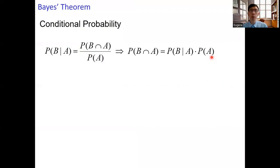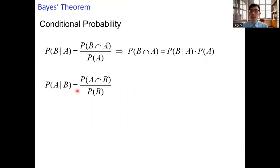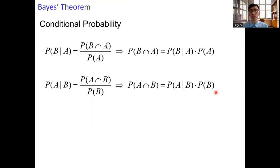If we swap the roles of B and A, we get the probability of A given B equals the probability of the intersection of A and B over the probability of B. Solving for the probability of the intersection of A and B, we get the probability of A given B times the probability of B.